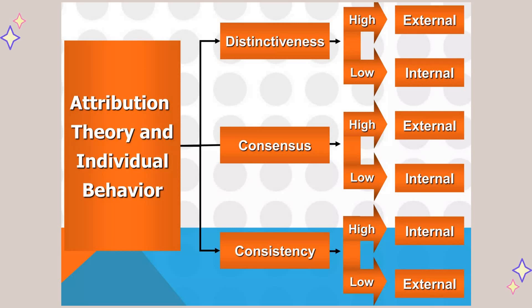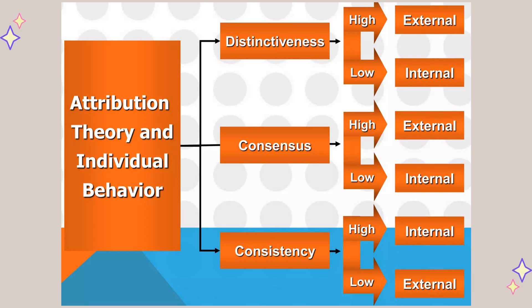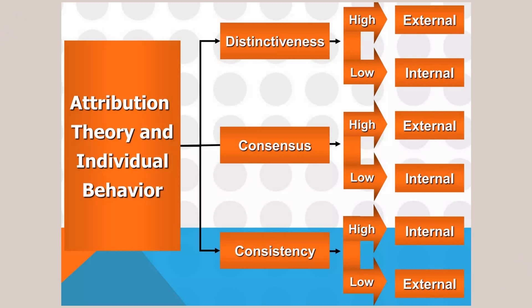Distinctiveness has a high value for external factors and a low value for internal factors. Consensus has a high value for external factors and a low value for internal factors. Consistency is the exact opposite to distinctiveness and consensus — high value for internal factors and low value for external factors.